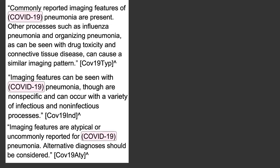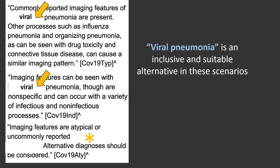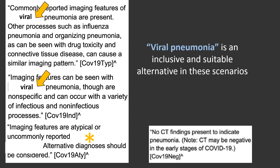For typical and indeterminate categories, if you prefer not to use the term COVID-19, you could substitute viral pneumonia. For the atypical category, remove COVID-19 and replace it with an alternative diagnosis. For negative findings, the note that CT may be negative in the early stages is optional and reserved for persons under investigation.